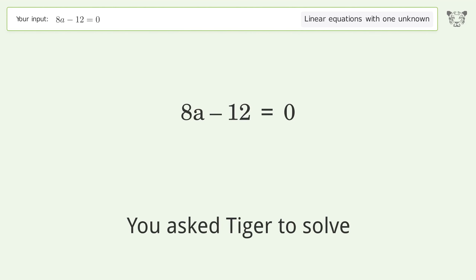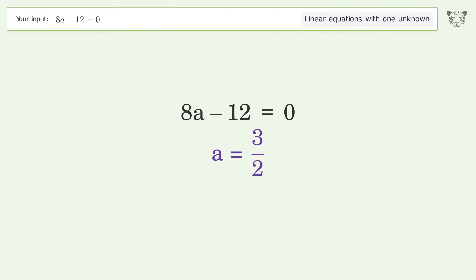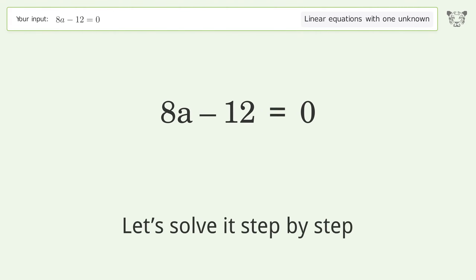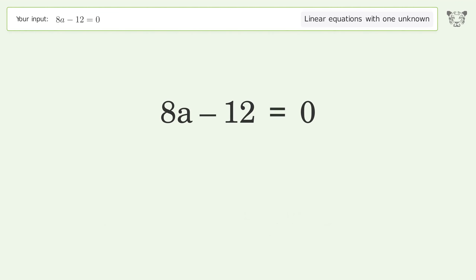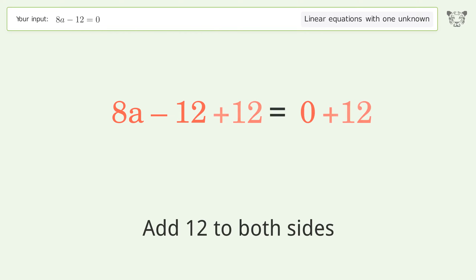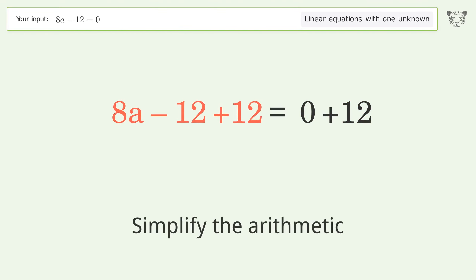Tiger is asked to solve a linear equation with one unknown. The final result is a equals 3 over 2. Let's solve it step by step: group all constants on the right side of the equation, add 12 to both sides, and simplify the arithmetic.